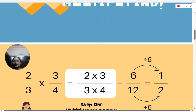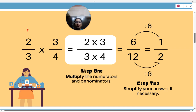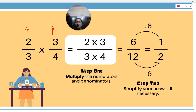We have 2 by 3. What is 2 by 3? It is one fraction. You will know that this is a proper fraction. In the proper fraction, the numerator is smaller than the denominator. This is a proper fraction. This is also a proper fraction.